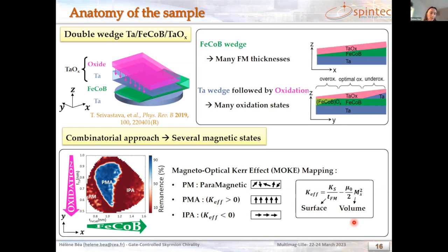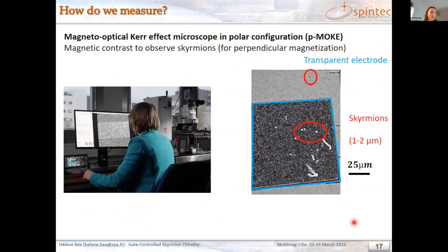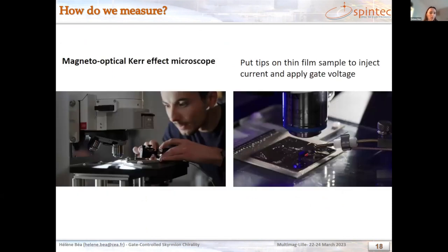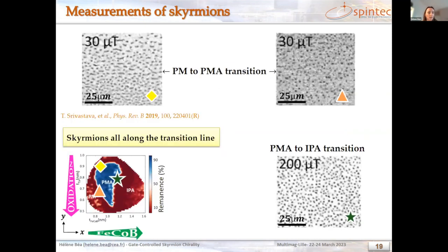To characterize the skyrmions we use a polar MOKE microscope. In the images, when we apply a gate voltage, we deposit a transparent electrode. We can see through or outside of the electrode. We observe skyrmions typically one to two microns in size. To apply a gate voltage or inject currents, we use tips or wires. Skyrmions are found at specific locations on the sample — on the line between the perpendicular and in-plane regions — because there the anisotropy is very small, so the cost of a domain wall is low and skyrmions can form.